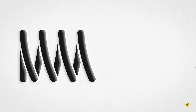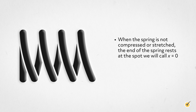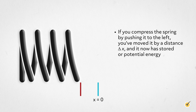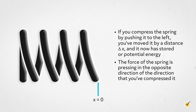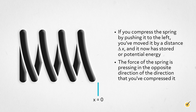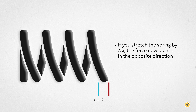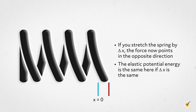Let's think about an example of a typical spring problem. Imagine a spring attached to a wall. When the spring is not compressed or stretched, the end of the spring rests at the spot we call x equals zero, and at this point it has no stored energy. If you compress the spring by pushing it to the left, you've moved it by a distance delta x, and it now has stored potential energy. The force of the spring presses in the opposite direction. Conversely, if you stretch the spring by delta x, the force points in the opposite direction. The elastic potential energy is the same if delta x is the same.